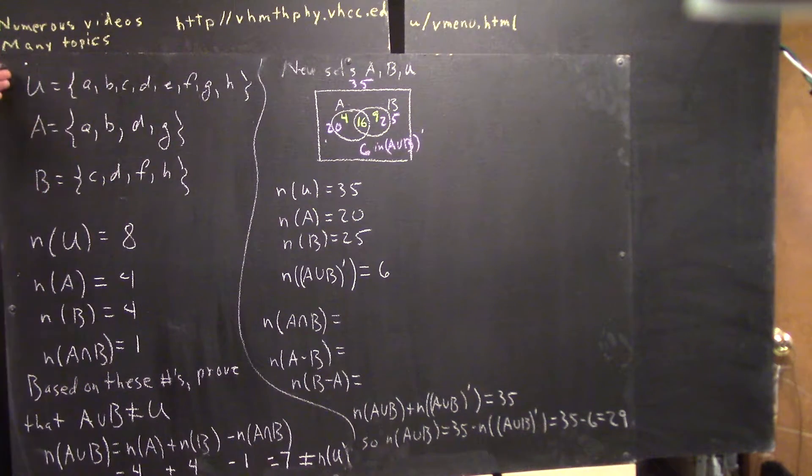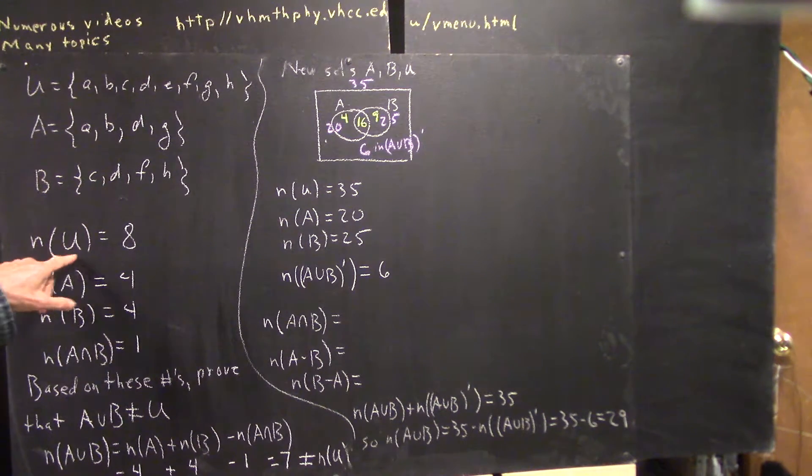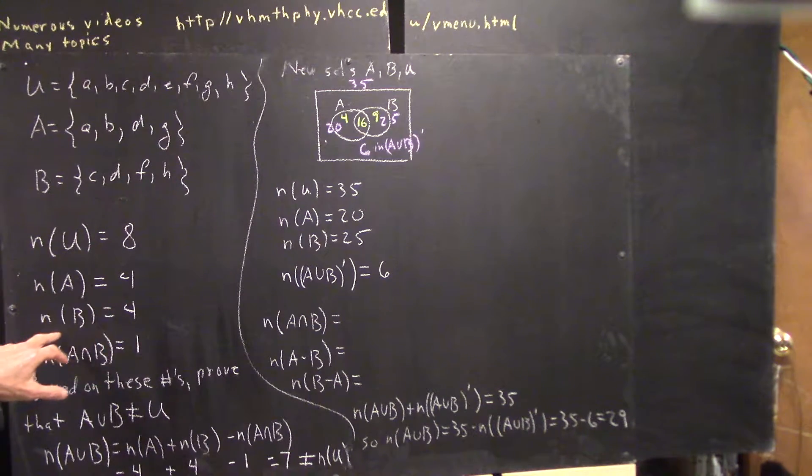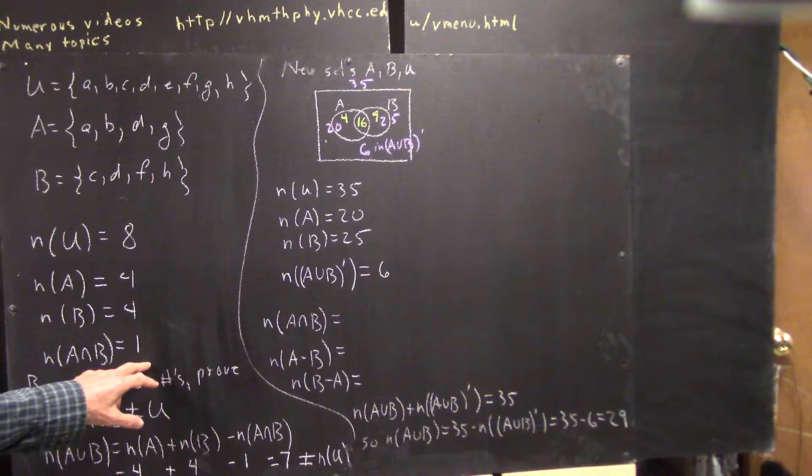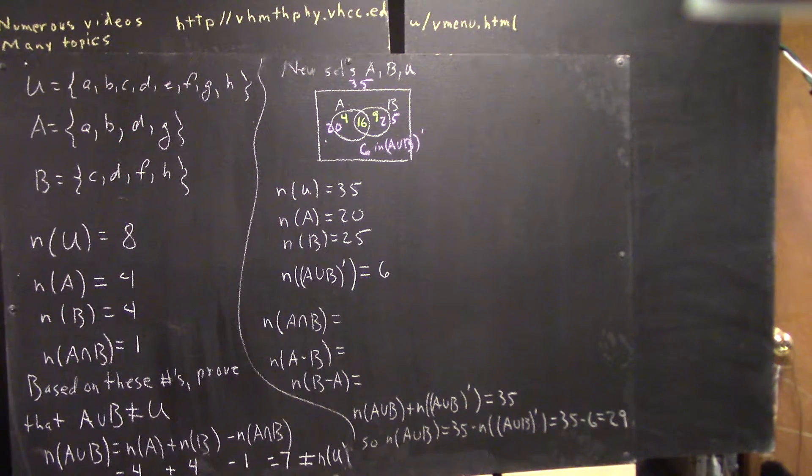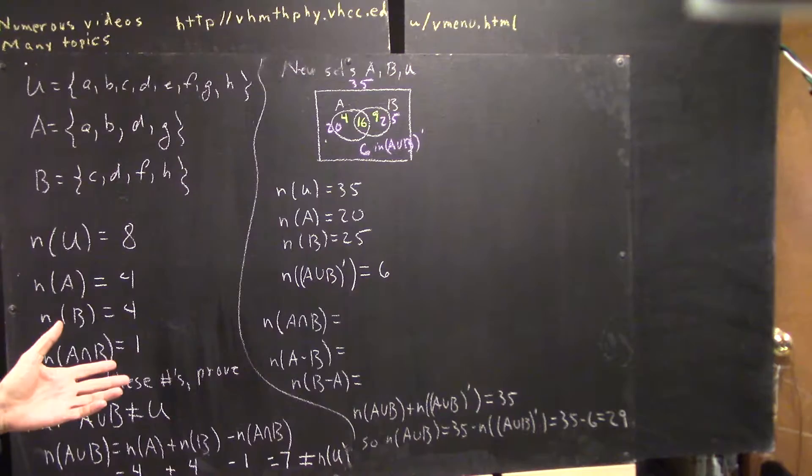Now, here again are our sets U, A, and B. We note that the cardinality of the set U is 8, the cardinality of A is 4, the cardinality of set B is 4, and the cardinality of A intersection B, which you recall consists just of the letter D, is 1.